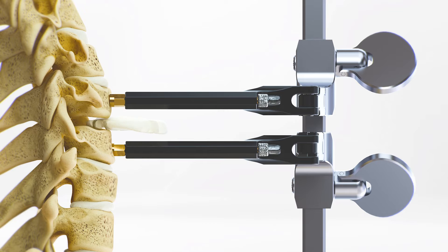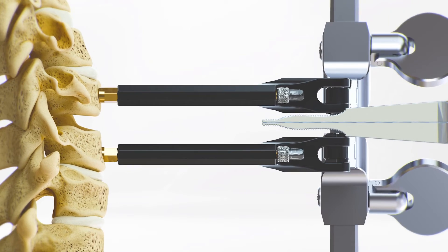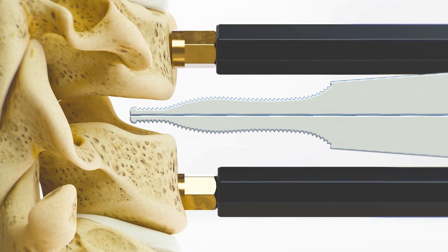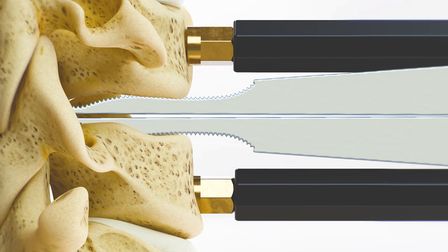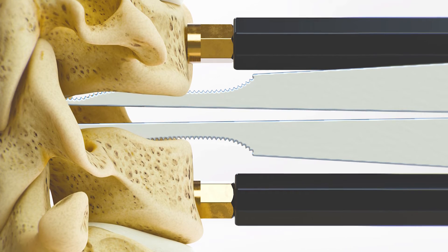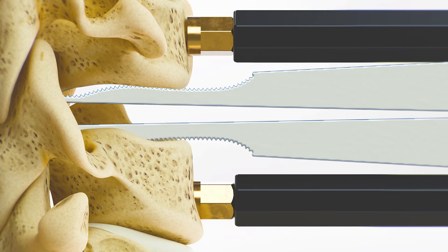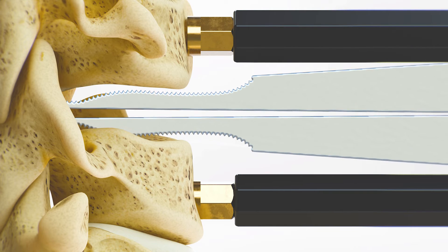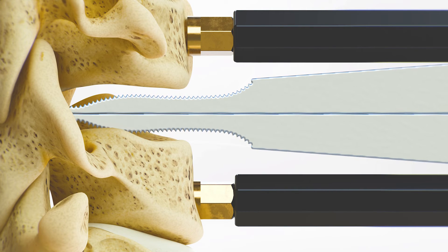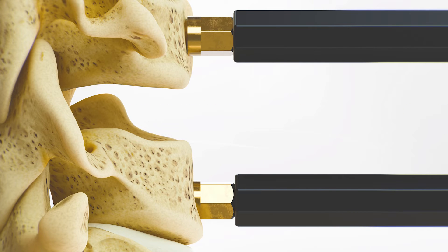Remove as much of the disc material as possible, allowing the tip of the ProDisc intervertebral spreader to be placed posteriorly in the disc space. Mild distraction may be applied with the ProDisc retainer to assist the discectomy. Distract the intervertebral space with the ProDisc intervertebral spreader and adjust the ProDisc retainer as needed to maintain distraction of the intervertebral space.